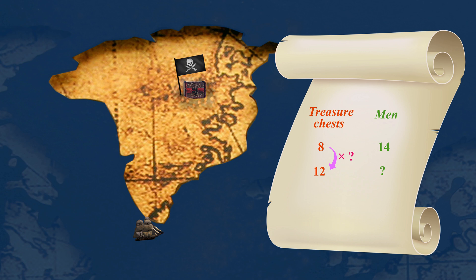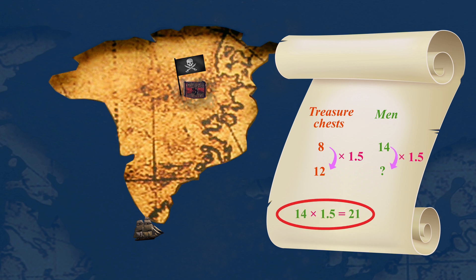Let's figure this out in reverse. 12 divided by 8 is 1.5, so 14 multiplied by 1.5 is 21. That means that 21 men can carry all the treasure.